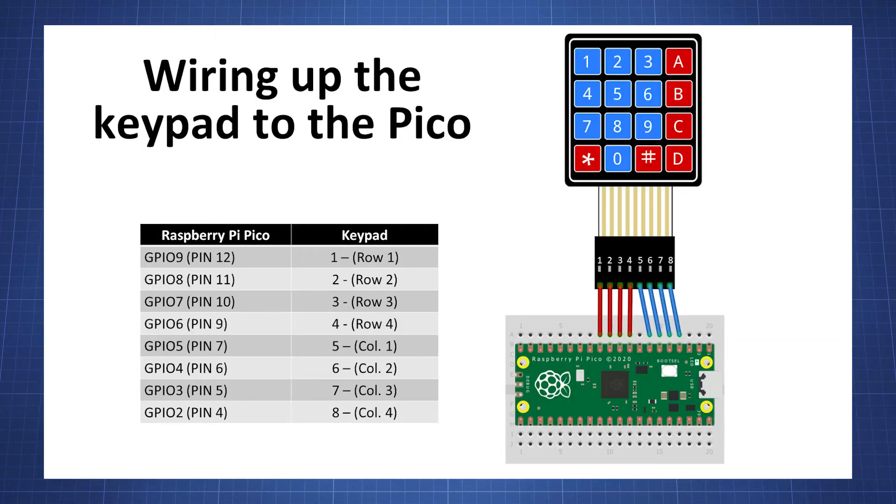Let's look at how we need to wire up the keypad to the Pico. We need 8 GPIO pins on the Pico to wire this up. I am using GPIO pin 2 to 9 and I will use pin 2 to 5 which will be my rows and pin 6 to 9 which will be the columns.